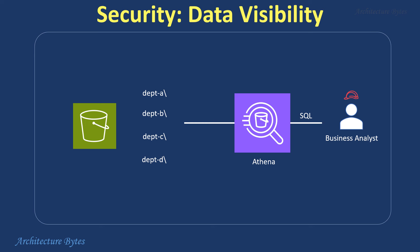For access control, create IAM roles that have permissions on relevant bucket subfolders using S3 prefixes. Allow business analysts to assume the relevant department role. This will give them access only to the corresponding department's data.